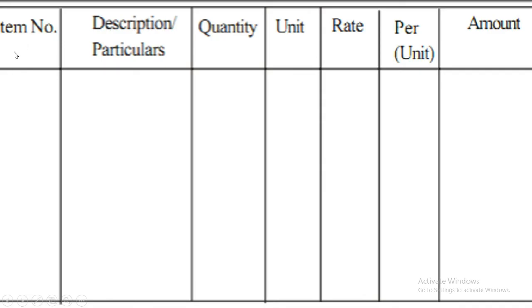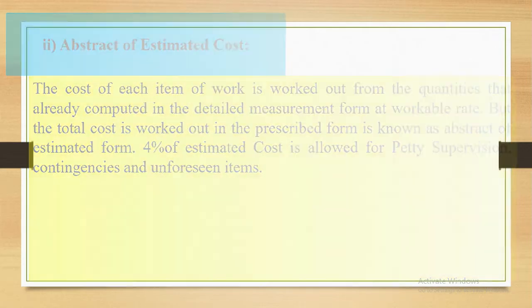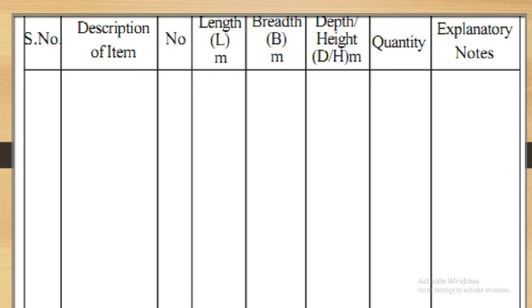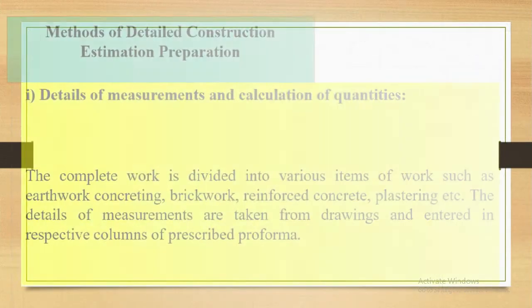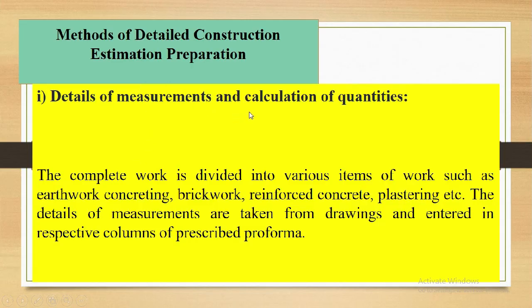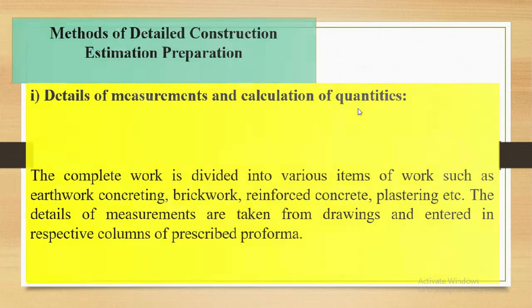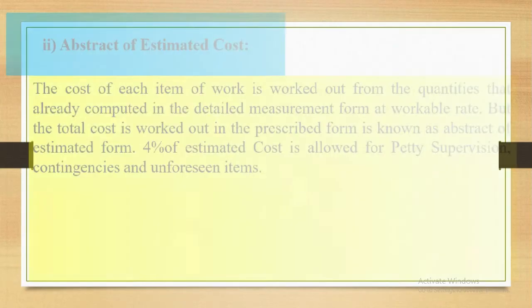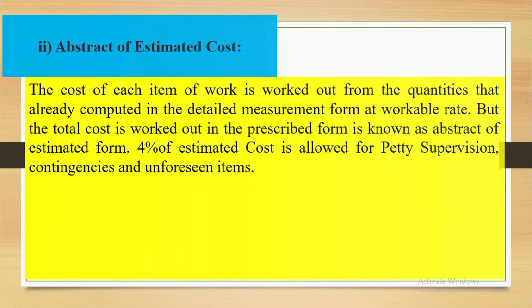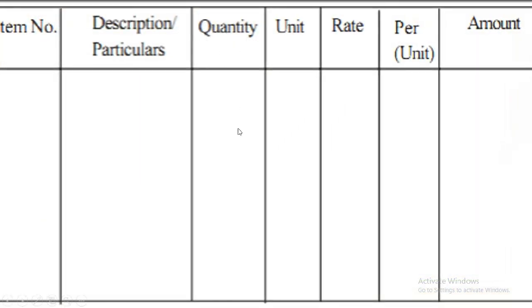Here we will notice the format of this. We define the item numbers and their description, quantity which we calculated. Here you will see, here we will calculate the measurements, quantities in the first method. And in second method we just put these quantities in the quantity column and their unit of the quantities and their rates per unit. Then we multiply them to get the amount which will be cost on that particular item.